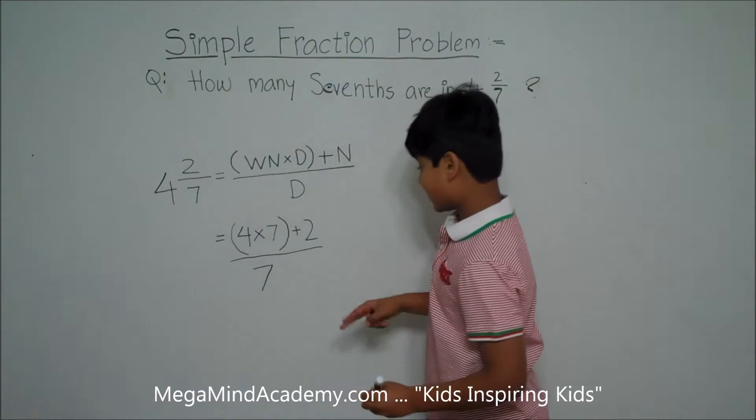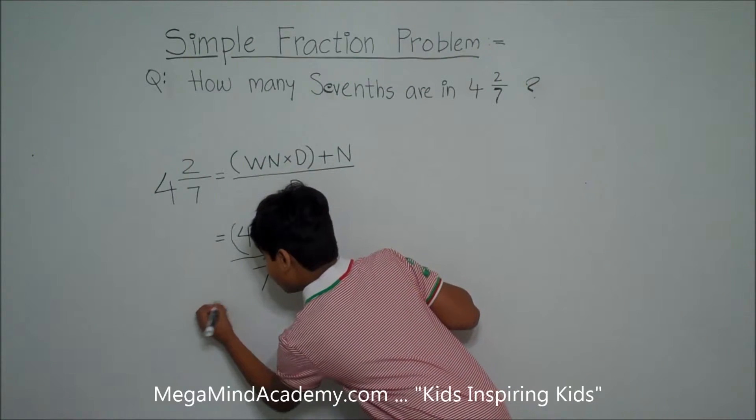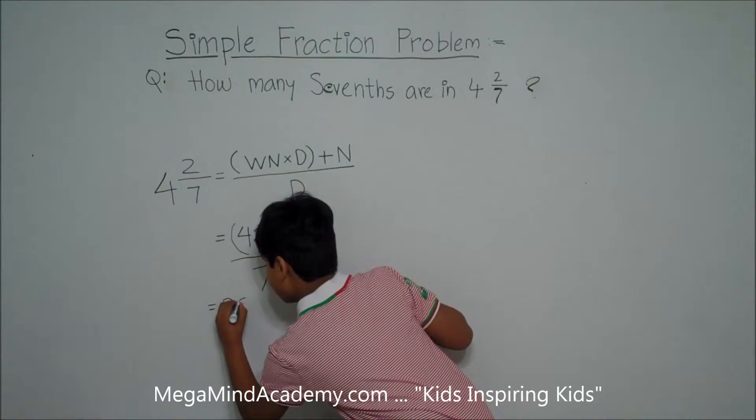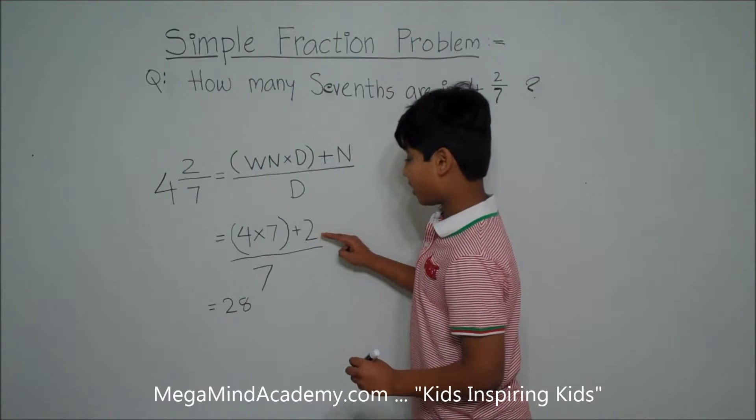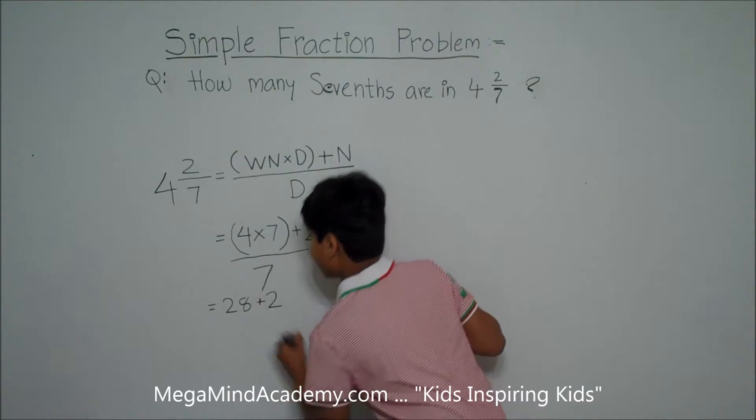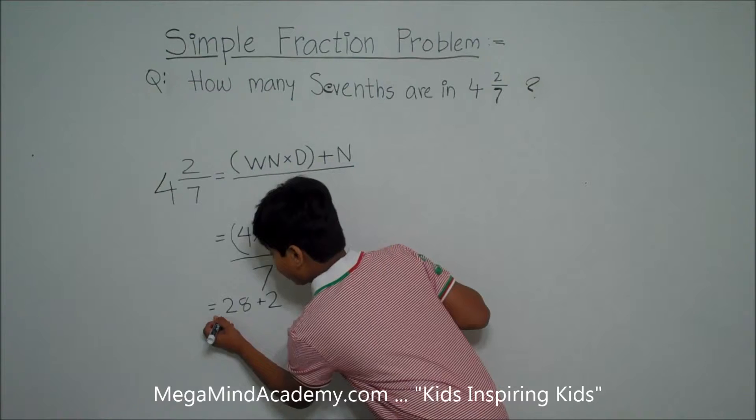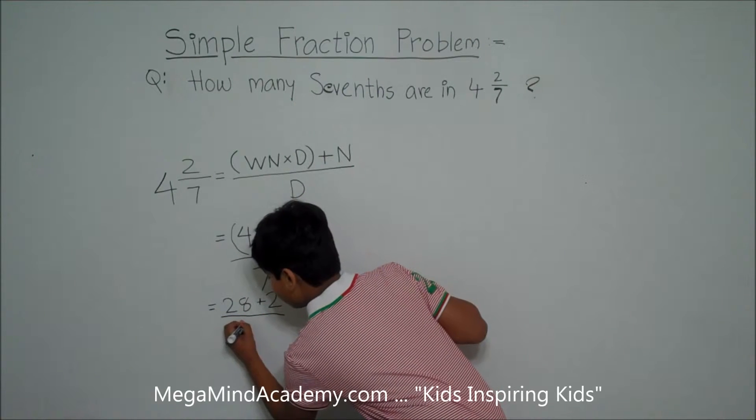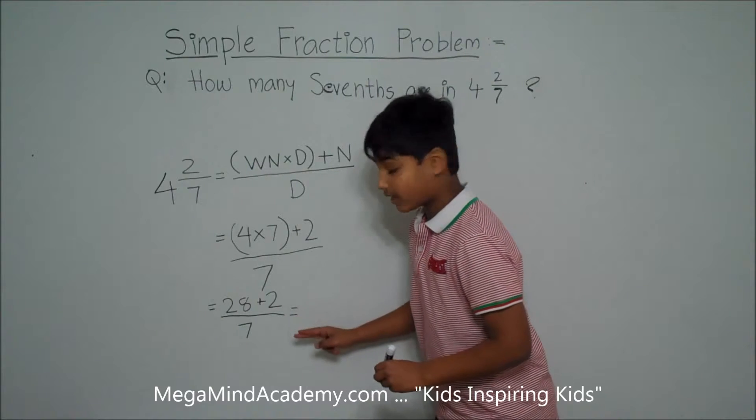We can simplify this. 4 times 7 is equal to 28, plus the numerator, which is 2, divided by the denominator, which is 7. And that is equal to 30 divided by 7.